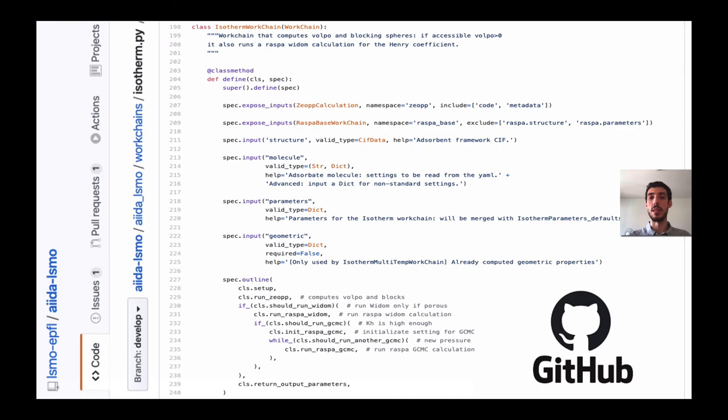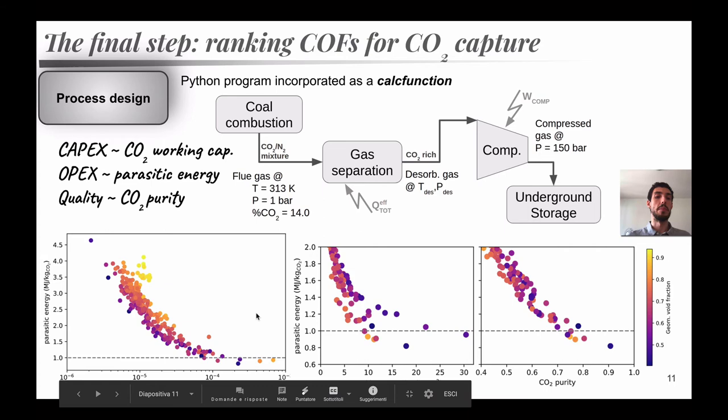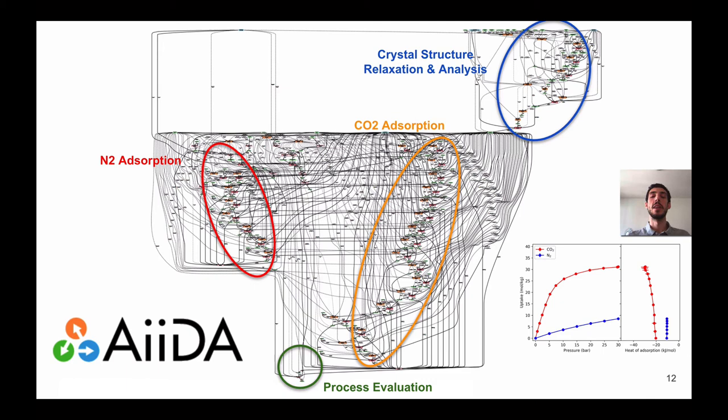The final step, going very fast because it's very technical, we implemented in Python a program that given the isotherm can estimate the performance for CO2 capture. And therefore we connected the output of the previous calculation, the information from the previous calculation to this program to compute this performance. The final graph looks pretty scary because we started from our crystal and we did the DFT optimization and pore analysis. And then you see how much logic there is to compute isotherms. And at the end, these are injected in our Python program to do the process evaluation.